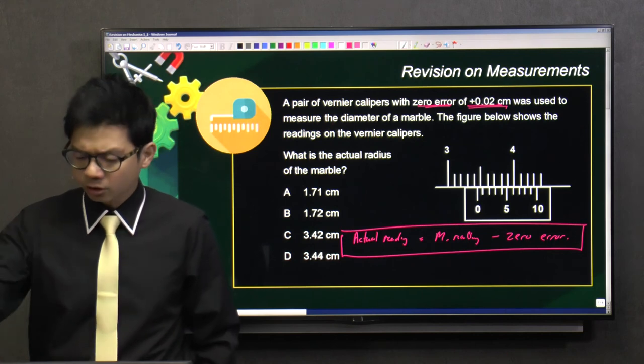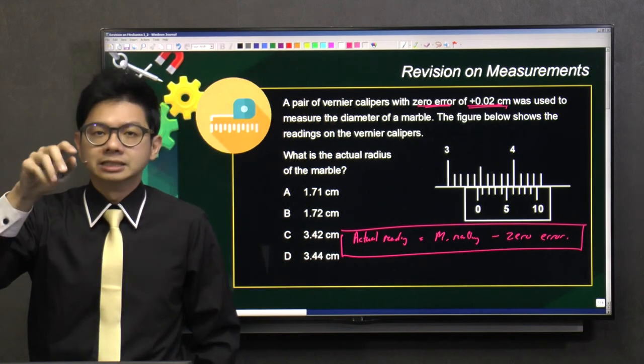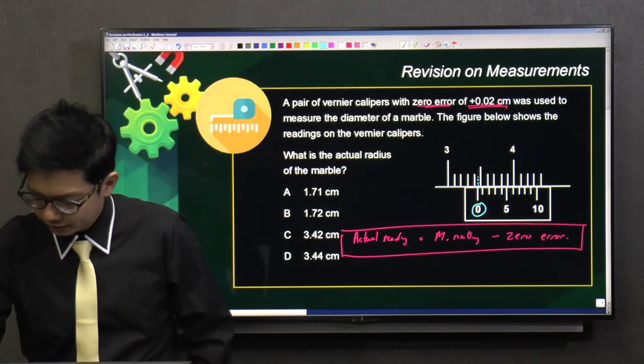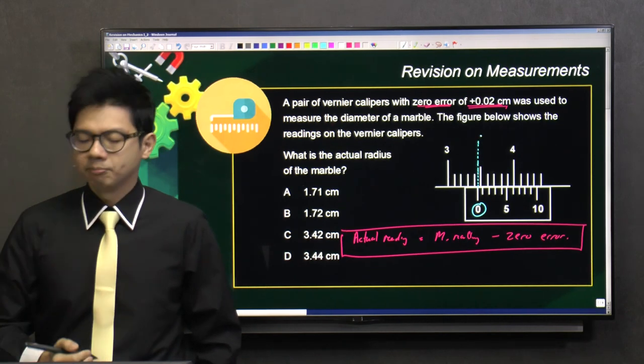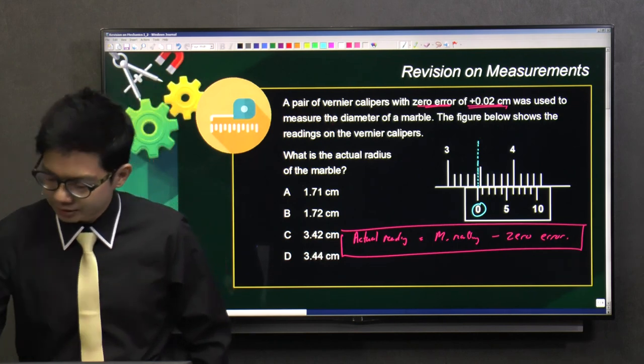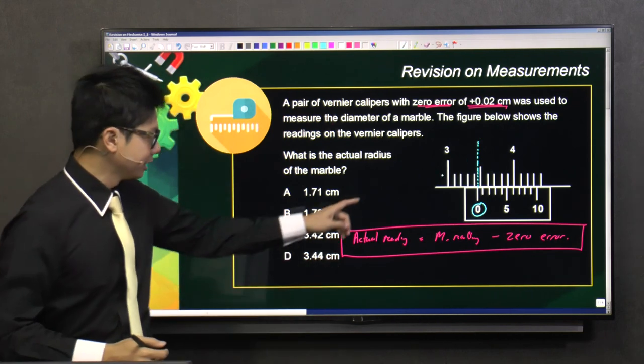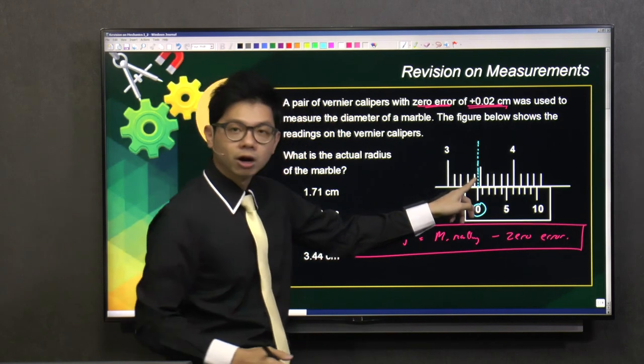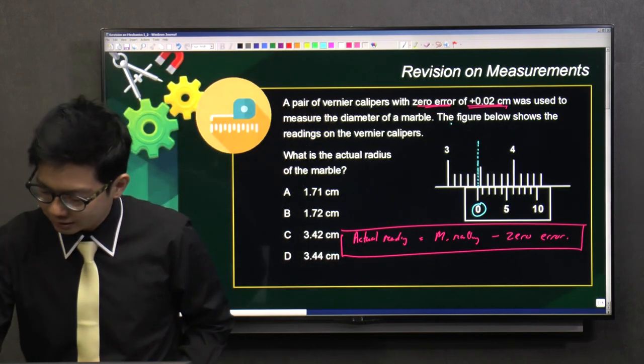We always start from the zero on the vernier scale. This is the zero on the vernier scale. Draw a vertical dotted line. So on the main scale, can you see that we read 3? This is 3, 3.1, 3.2, 3.3, 3.4. So from the main scale, we read 3.4 cm.